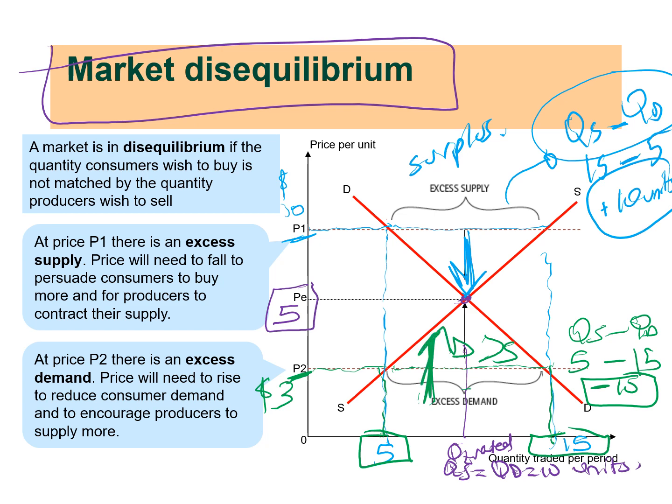Prices will need to rise to reduce consumer demand and to encourage producers to supply more. A market disequilibrium is when the quantity consumers wish to buy — the quantity demanded — is not matched by the quantity producers wish to sell. A useful tip: please draw a demand and supply diagram when explaining how prices move from disequilibrium towards equilibrium.